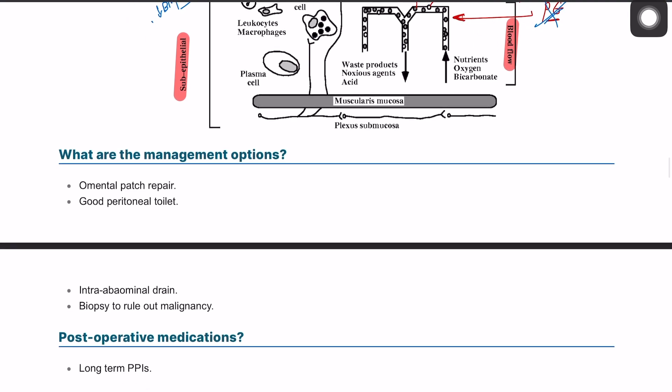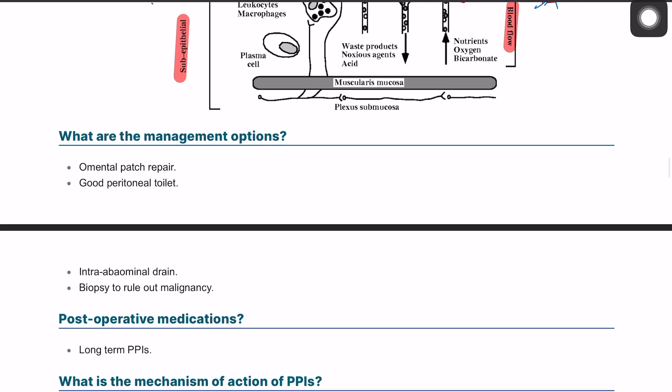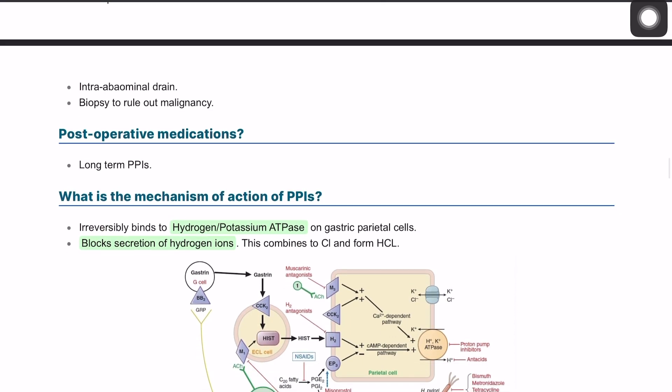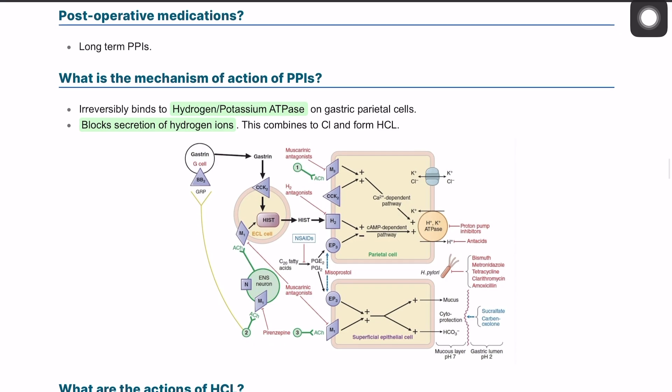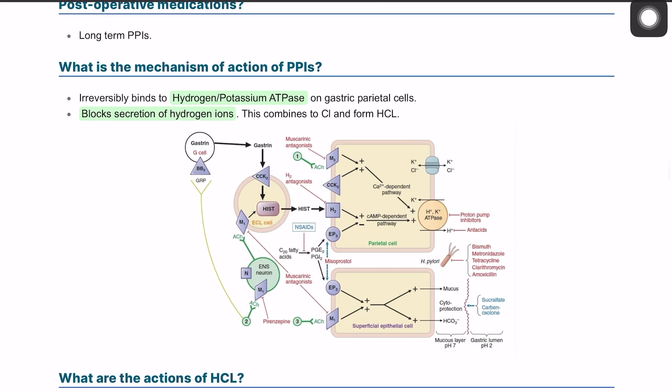The management options for a perforated peptic ulcer include injecting adrenaline, placing an omental patch, and performing a peritoneal toilet if the patient has had a perforation. A biopsy can also be taken to rule out malignancy.